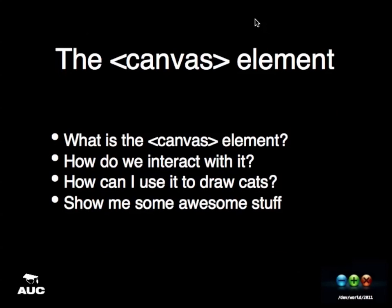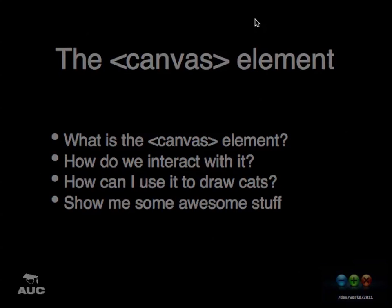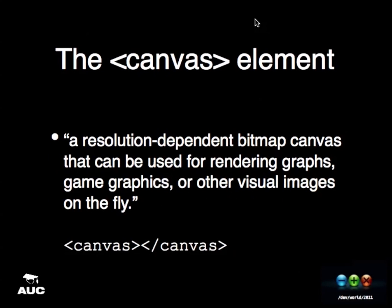So the Canvas element — you probably came here with a lot of questions and I'm going to try and cover as much as possible. You're probably wondering: what is the Canvas element itself? How can we do things with it? How do you interact with it? How can I use it to draw cats? The HTML5 specification says that the Canvas element is a resolution-dependent bitmap canvas that can be used for rendering graphs, game graphics, and other visual images on the fly.